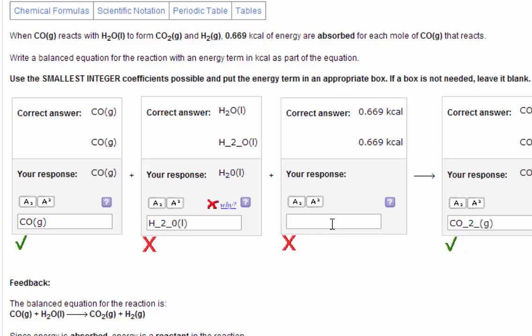This one here, you didn't enter the heat value. You get the heat value from the information in the equation. And up here they say there's 0.669 kilocalories absorbed for each mole of carbon monoxide.